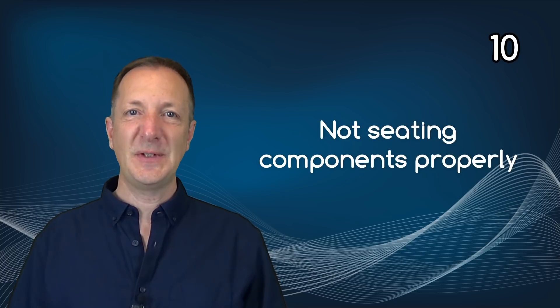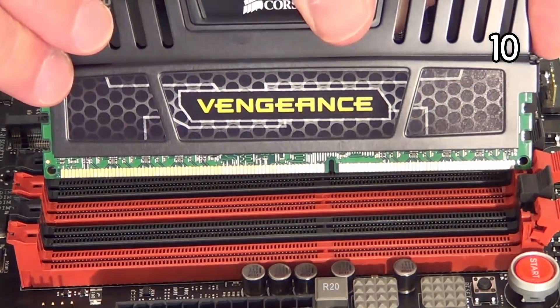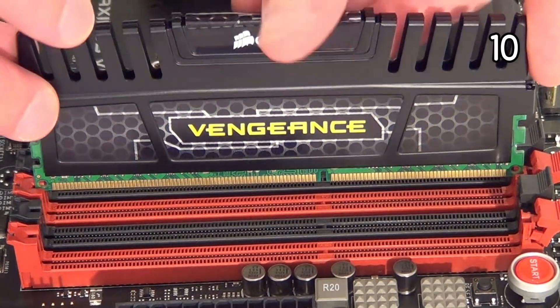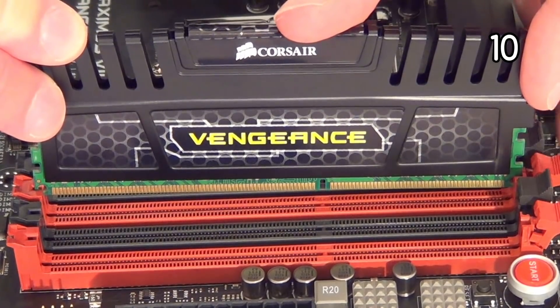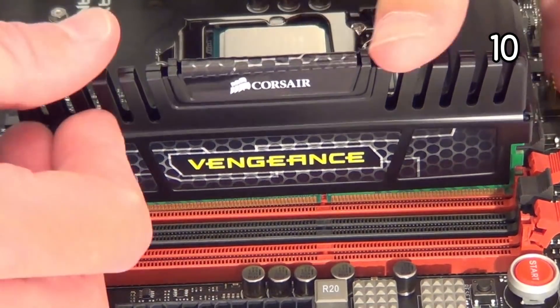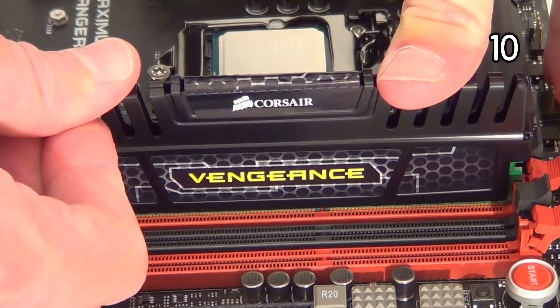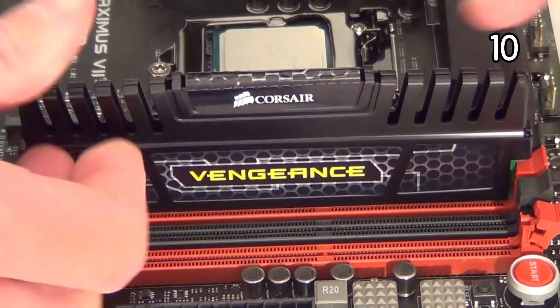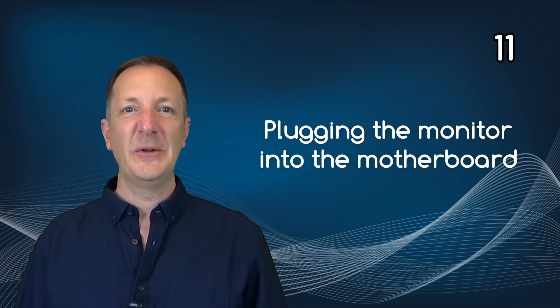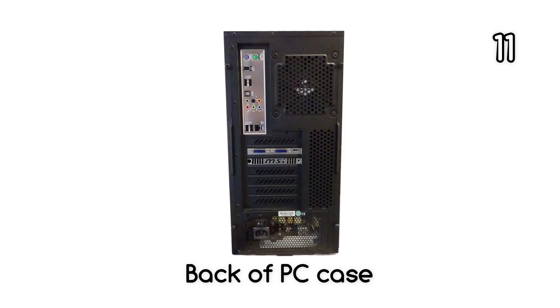Number ten: not seating components properly. If a component such as a graphics card, system memory, or some other component is only partially plugged in, it's likely that the computer when turned on won't even know it's there. So simply check that each component has been firmly plugged in. Number eleven: plugging the monitor into the motherboard. Many people plug the monitor straight into the motherboard when they have a dedicated graphics card in the computer case. If you do have a graphics card, whilst the computer is turned off, plug the monitor into the graphics card instead of the motherboard.